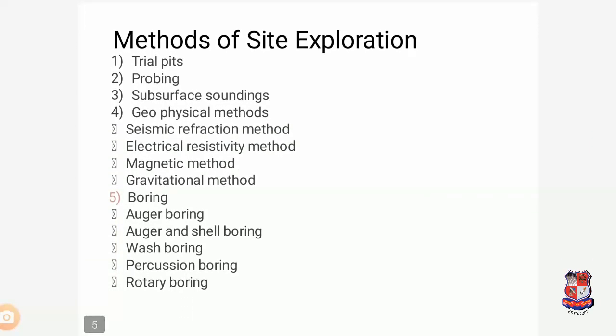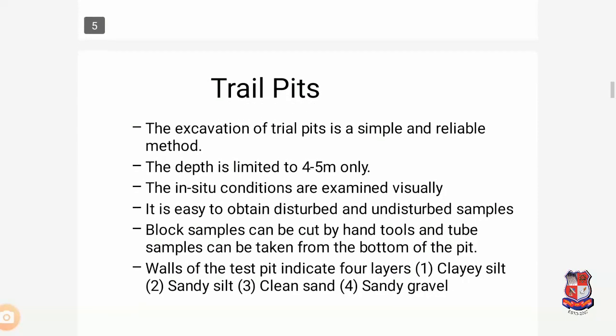The different methods of investigation or exploration are: first, trial pit; second, probing; third, subsurface sounding; fourth, geophysical methods — which include the seismic refraction method, electrical resistivity method, magnetic method, and gravitational method; and fifth, boring — which has five types: auger boring, auger and shell boring, wash boring, percussion boring, and rotary boring. Let's see these one by one.